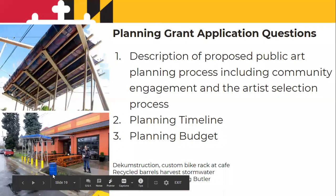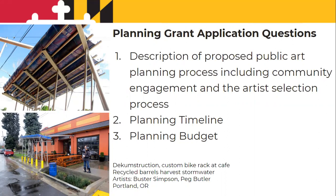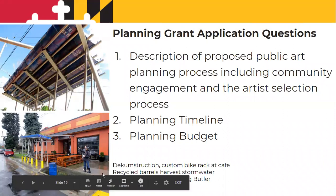The planning grant application is very simple. These are the three main questions that we ask. We just ask you to describe what your process is going to be — I'll be showing you the various processes you might use in your particular community, including community engagement processes and how you might select an artist. You also need to think about the timeline: what are the goals and when do you want to debut the project? And of course, the planning budget.